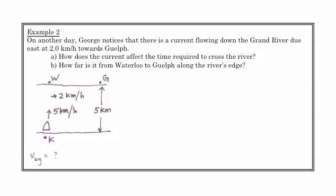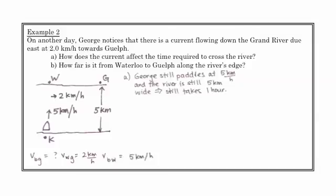Here, we've got our standard notations. The velocity of the boat with respect to the ground is what we don't know, and the water with respect to the ground is 2 kilometers per hour. The velocity of the boat with respect to the water, 5 kilometers per hour. So this is just some formalizing here. But the answer to A is that George still paddles at 5 kilometers per hour, and the river is still 5 kilometers wide. So really, it still takes an hour to cross that river. He doesn't end up in the same spot though.